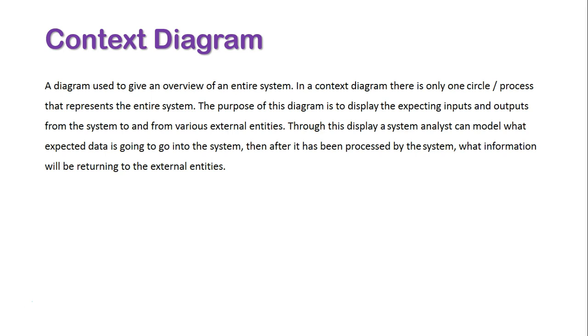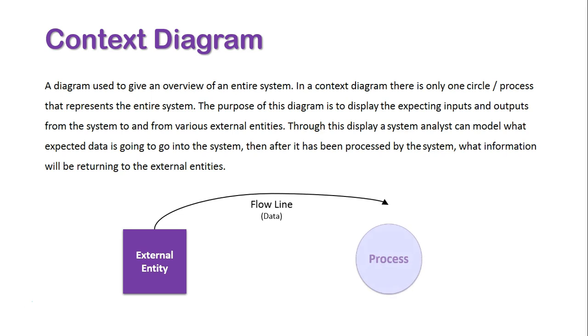Here's a basic outline of the context diagram. We have an external entity. They are going to enter data into the system, and there's only ever one circle or process in a context diagram. A flowline represents what data is going into the system.